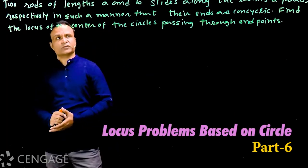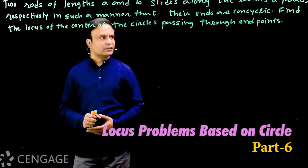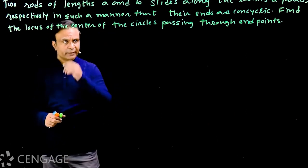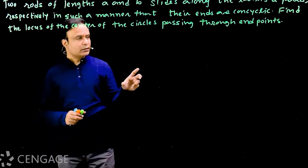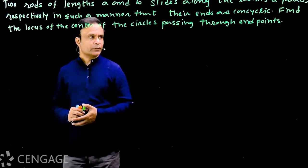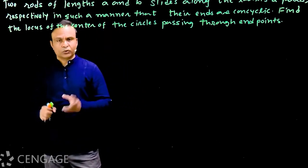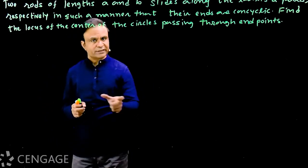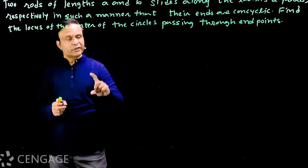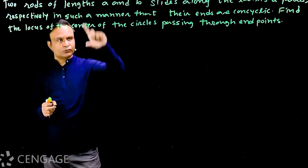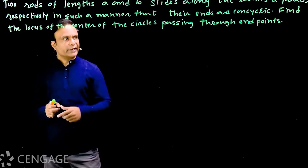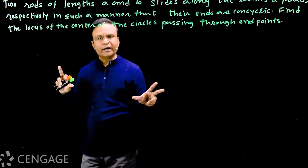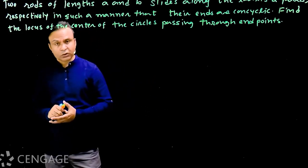Two rods of lengths a and b slide along the x-axis and y-axis respectively in such a manner that their ends are concyclic. There are two rods — one rod of length a is sliding along the x-axis, and the other rod of length b is sliding along the y-axis. Their four endpoints are concyclic.